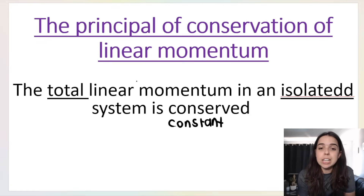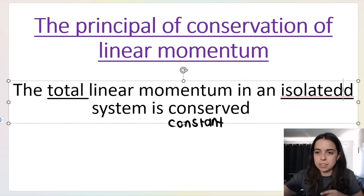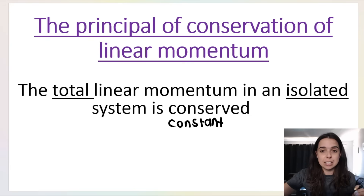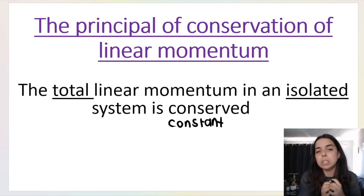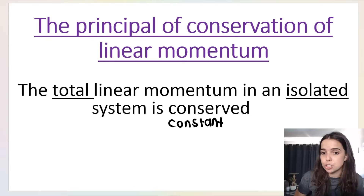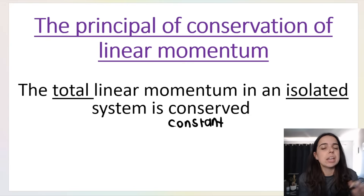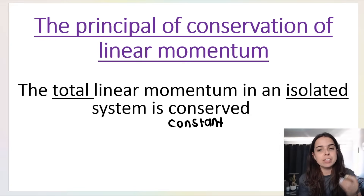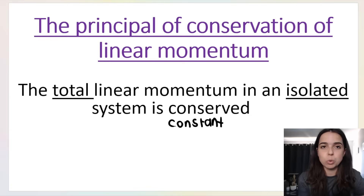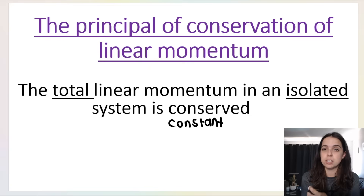The total linear momentum in an isolated system is conserved — meaning it stays the same. Before the crash, if you take A and B's momentum added together, it will equal A and B's momentum added together after the crash. Note: in old textbooks it may say 'closed system,' but you must say 'isolated.' In grade 12 physics we use 'isolated,' and we use 'closed' in the context of chemistry — that's for chemical equilibrium.